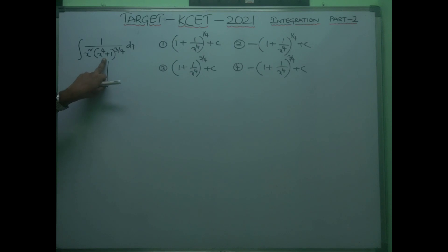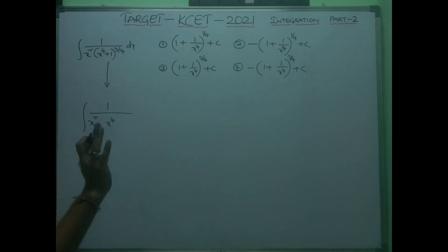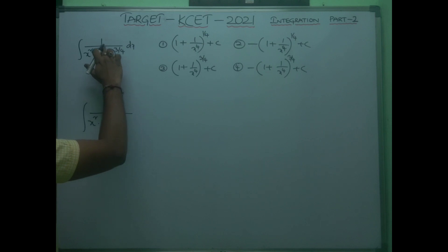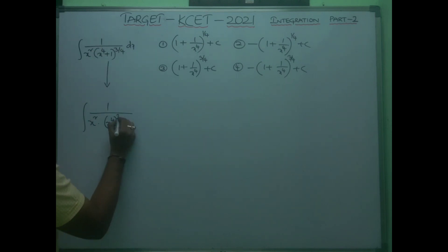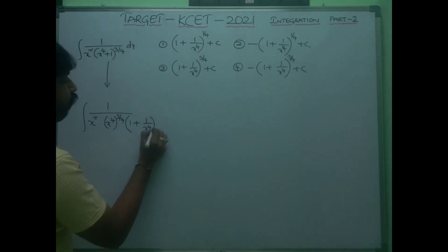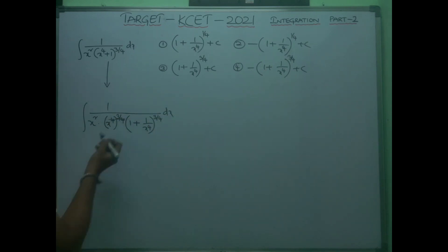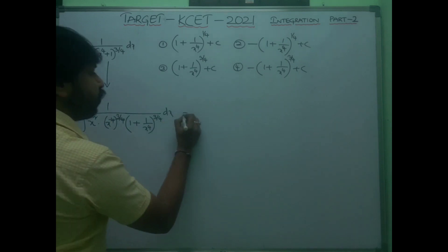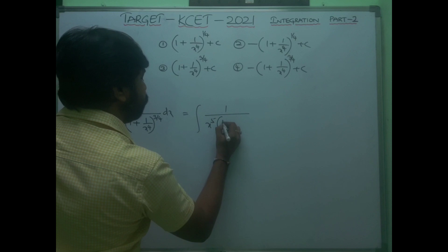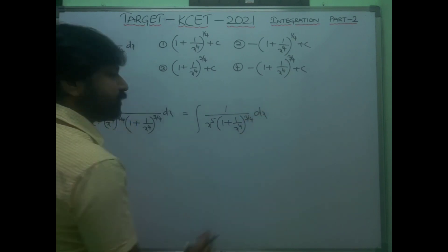Taking x⁴ common from (x⁴+1)^(3/4): you get (x⁴)^(3/4)·(1 + 1/x⁴)^(3/4) = x³·(1 + 1/x⁴)^(3/4). So the integrand becomes 1/[x²·x³·(1 + 1/x⁴)^(3/4)] = 1/[x⁵·(1 + 1/x⁴)^(3/4)] dx.